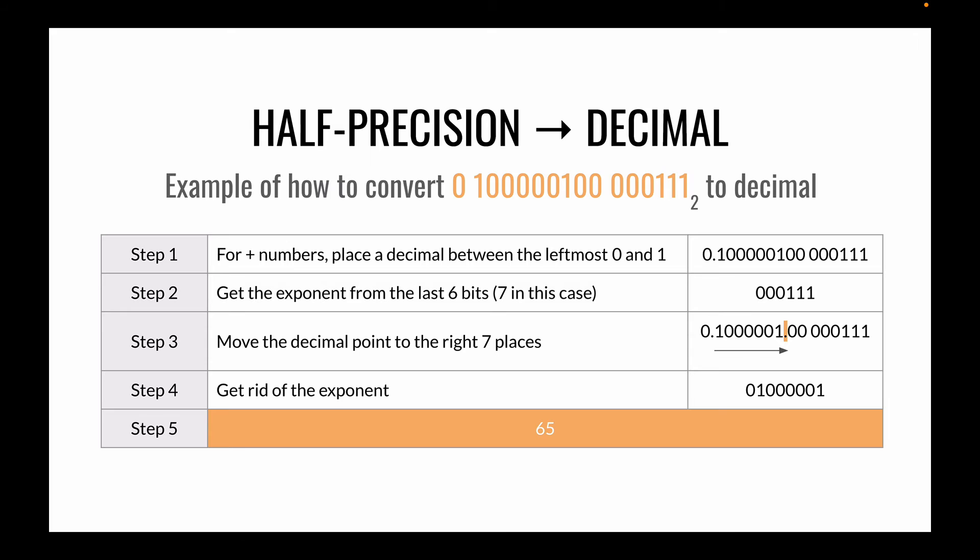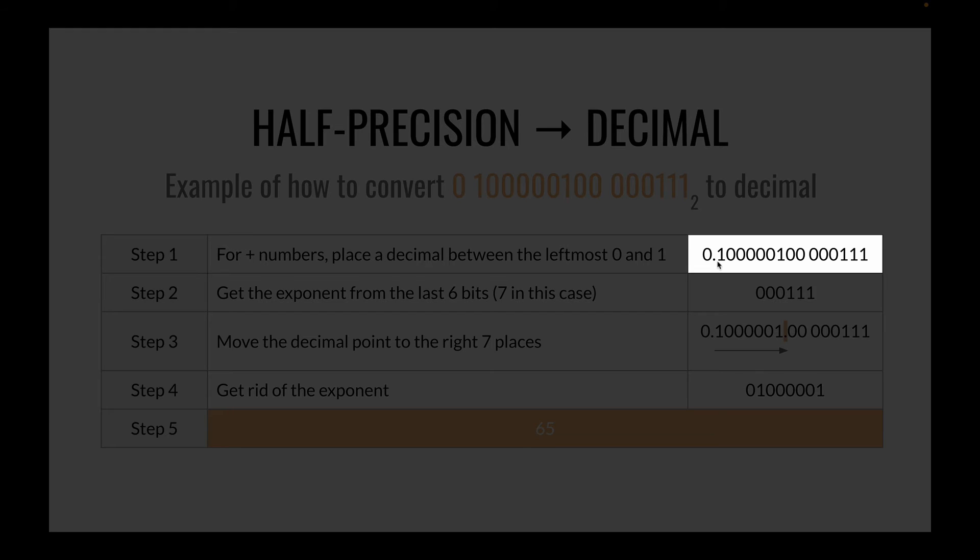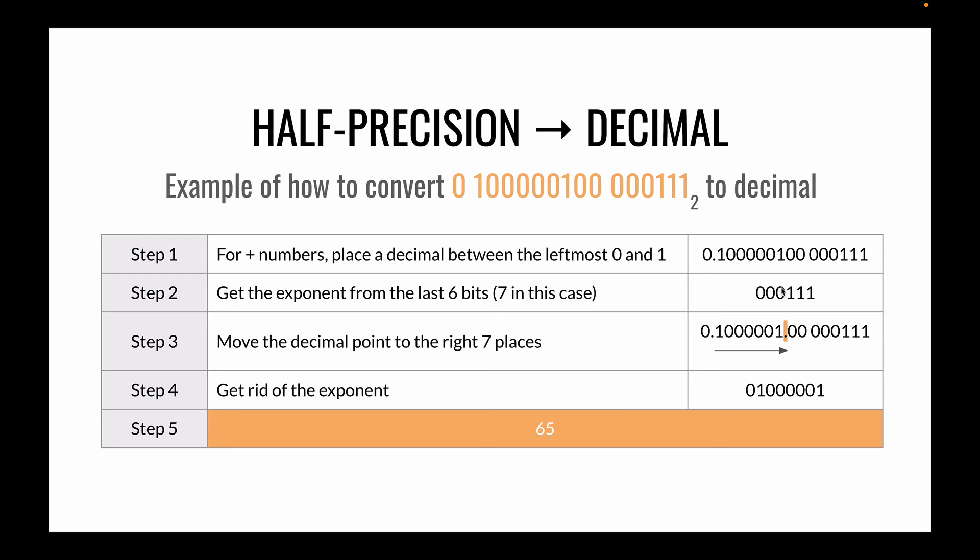So let's look at some examples of how to convert from half precision to decimal. So here we have this number and we have the decimal place sitting between the leftmost 1 and the leftmost 0. And we have an exponent of 7. So in this case just like we did with the other conversion we can move our decimal back to the right and we can restore our original number back to 65.